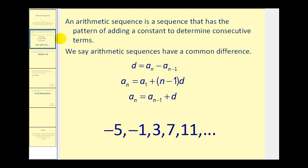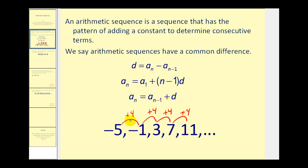As we learned in the previous video, an arithmetic sequence is a sequence that has a pattern of adding a constant to determine consecutive terms. We can say that arithmetic sequences have a common difference. If we look at this sequence and look for a pattern, we'll notice there's a pattern of adding four to obtain the next term. Because the pattern stays consistent of adding a constant, this is an arithmetic sequence.